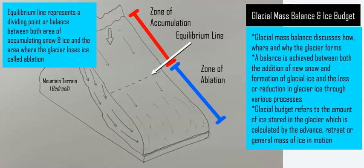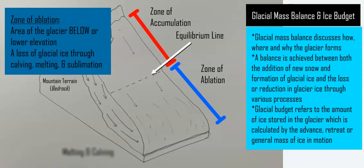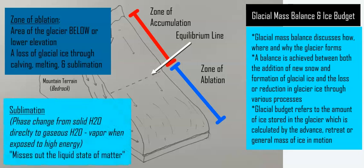Below that dashed line you have the zone of ablation, which is a term for loss, where the glacier decreases in mass through various processes. Either the glacier reaches its terminus where the ice breaks off — calving — and forms icebergs of various sizes, or it could decrease through evaporation or melting. The phase change directly from snow to gas is called sublimation, a special kind of phase change that incorporates a lot of energy and forces the solid glacial ice or snow to bypass the liquid phase and go straight from solid to gas.